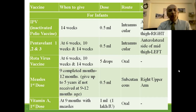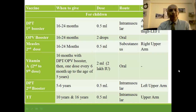Pentavalent 1st, 2nd, and 3rd doses are given at 6, 10, and 14 weeks — 0.5 ml intramuscularly on the left anterolateral thigh. Rotavirus vaccine is given at 6, 10, and 14 weeks — 5 drops orally. Measles first dose is given at 9 to 12 completed months, also up to 5 years if not received — 0.5 ml subcutaneously in the right upper arm. Vitamin A first dose is given at 9 months along with measles — 1 ml orally. DPT first booster is given at 16 to 24 months — 0.5 ml intramuscularly on the left thigh.